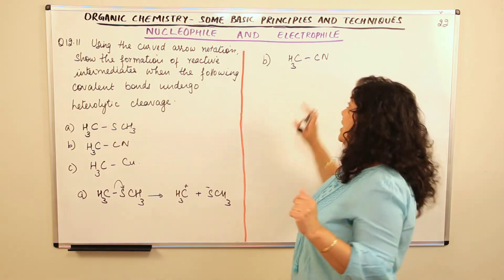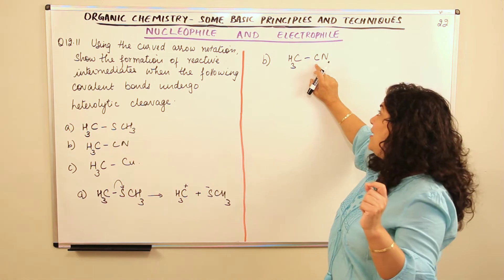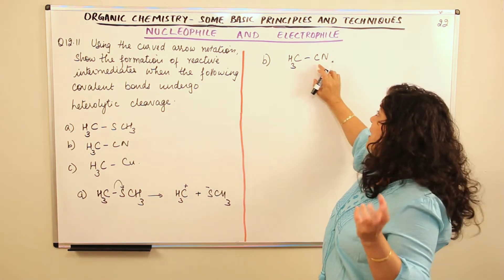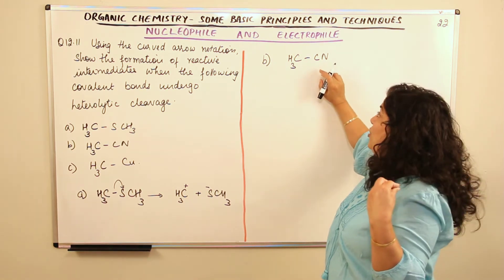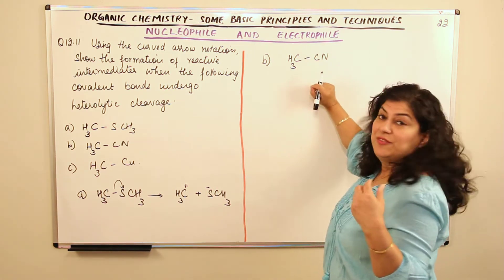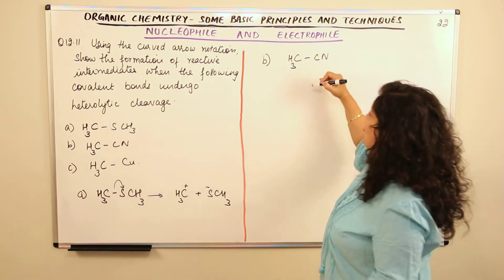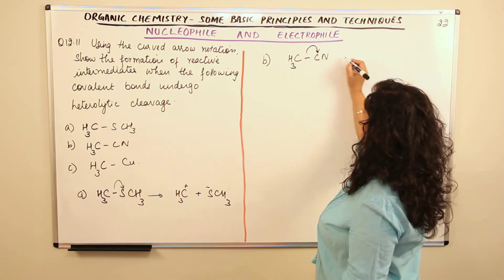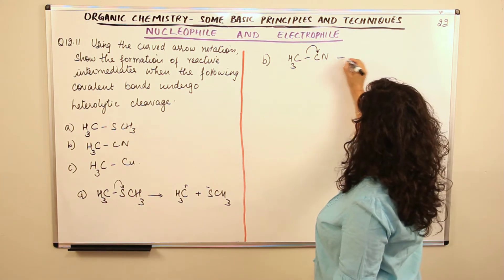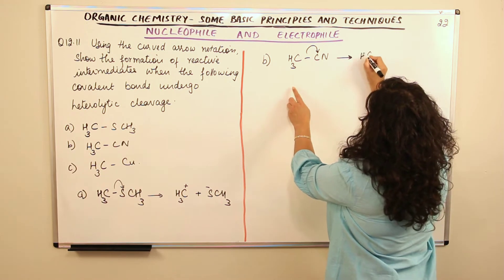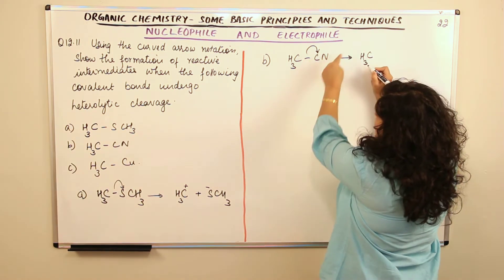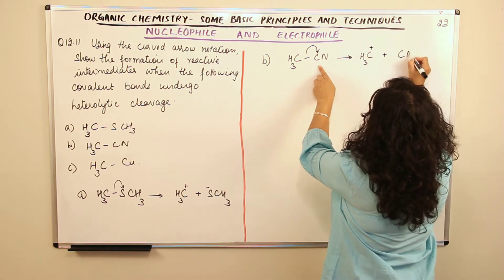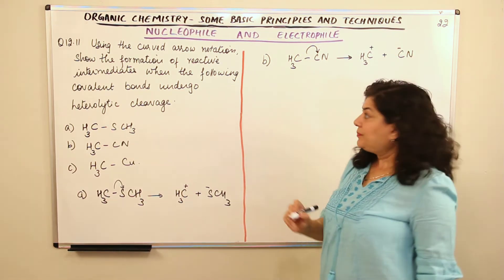It is a partial positive charge, not an actual positive charge — but apparent. Because the electrons are attracted toward nitrogen, when heterolytic cleavage occurs, the two electrons move from the CH₃ carbon toward the CN carbon. Using curved arrow notation, we get: CH₃C⁺ (carbocation) and ⁻CN (carbanion — the CN carbon is negatively charged).